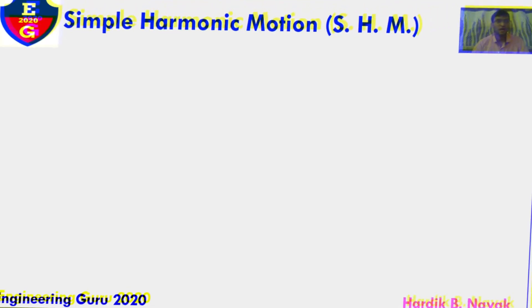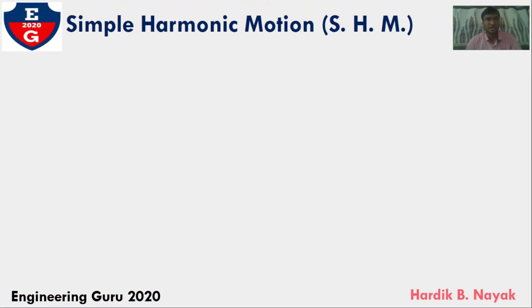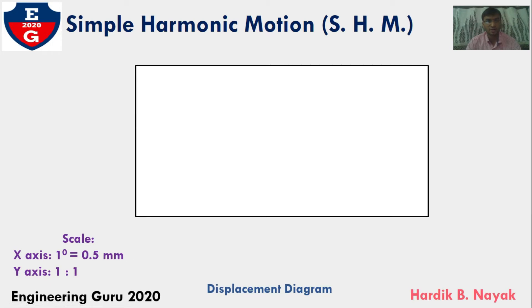I will share one easy technique for displacement diagram of simple harmonic motion. I would be assuming some data. Scale for x-axis 1 degree equal to 0.5 mm, a reducing scale, and for y-axis 1 to 1. Draw a rectangle from the given data.